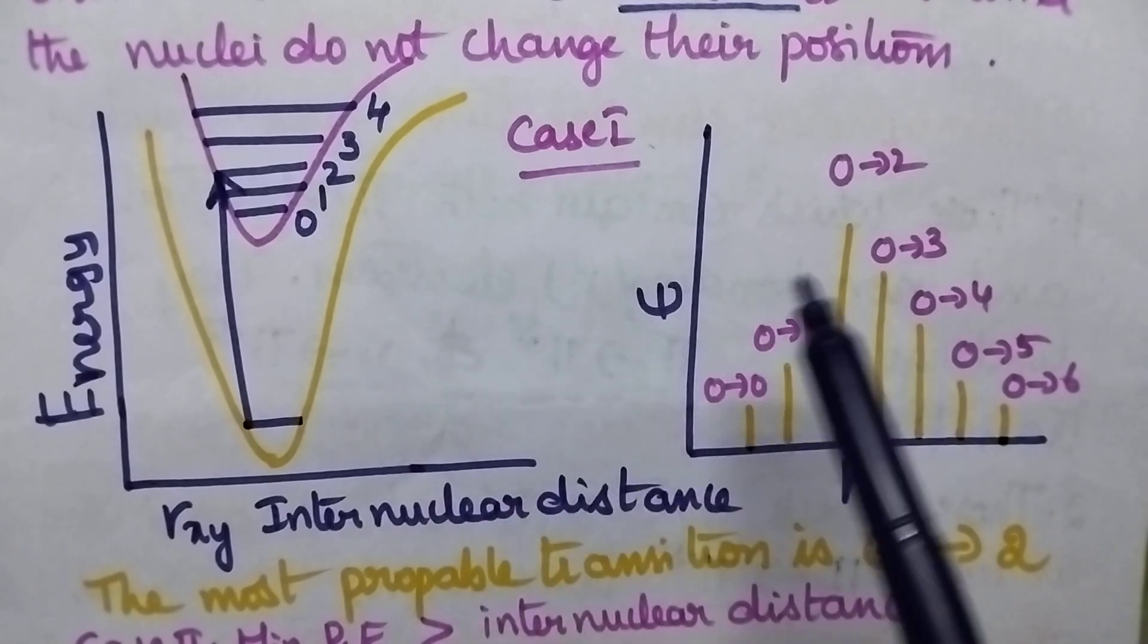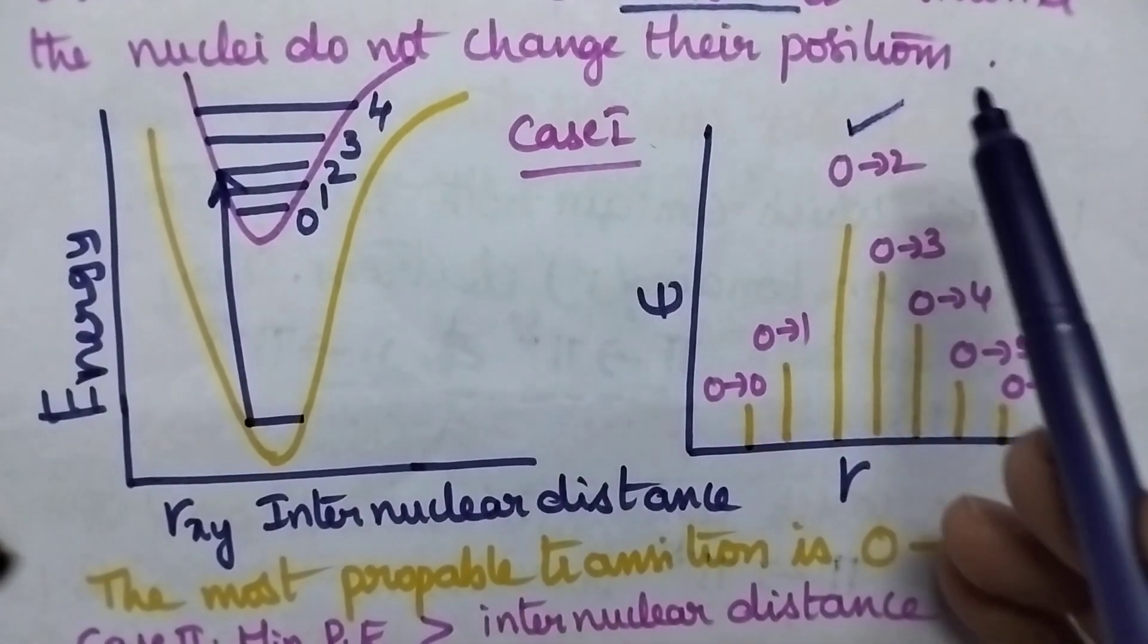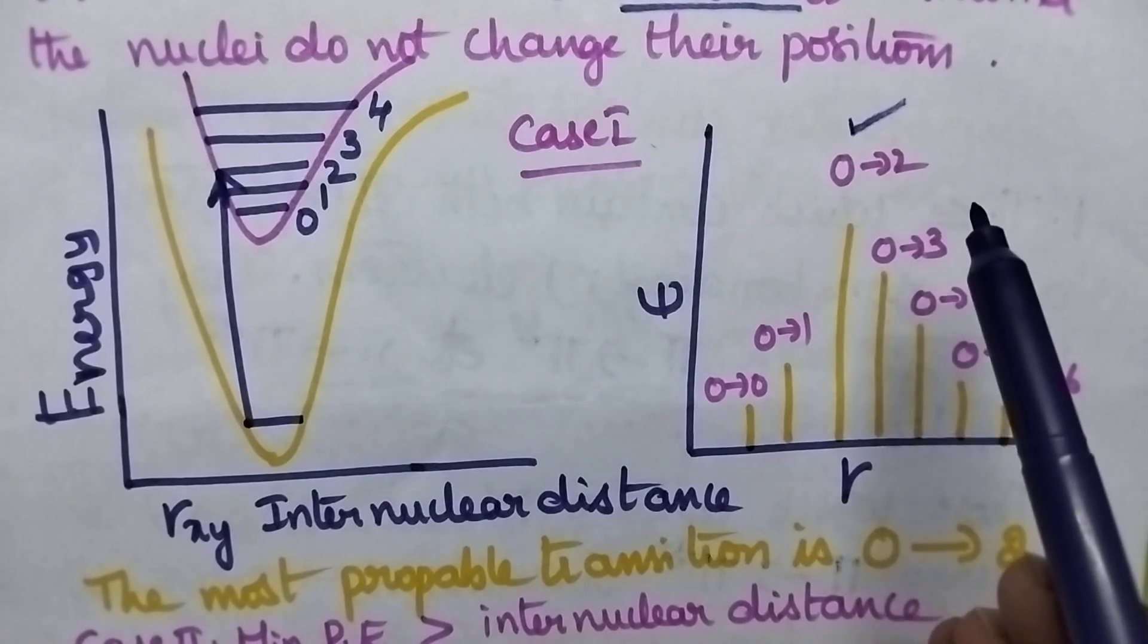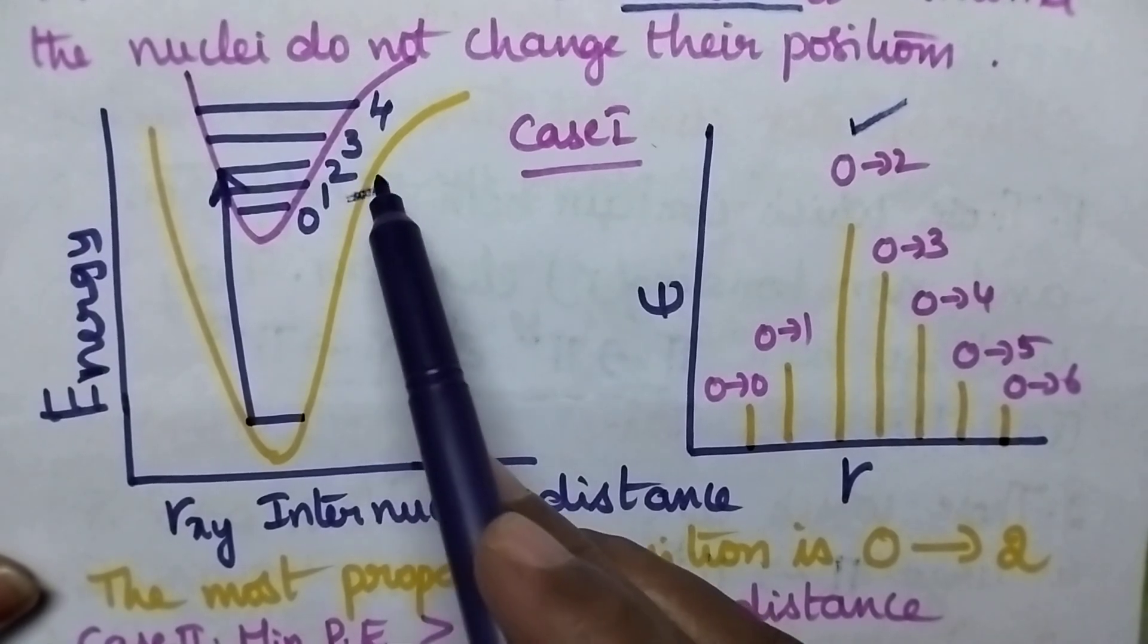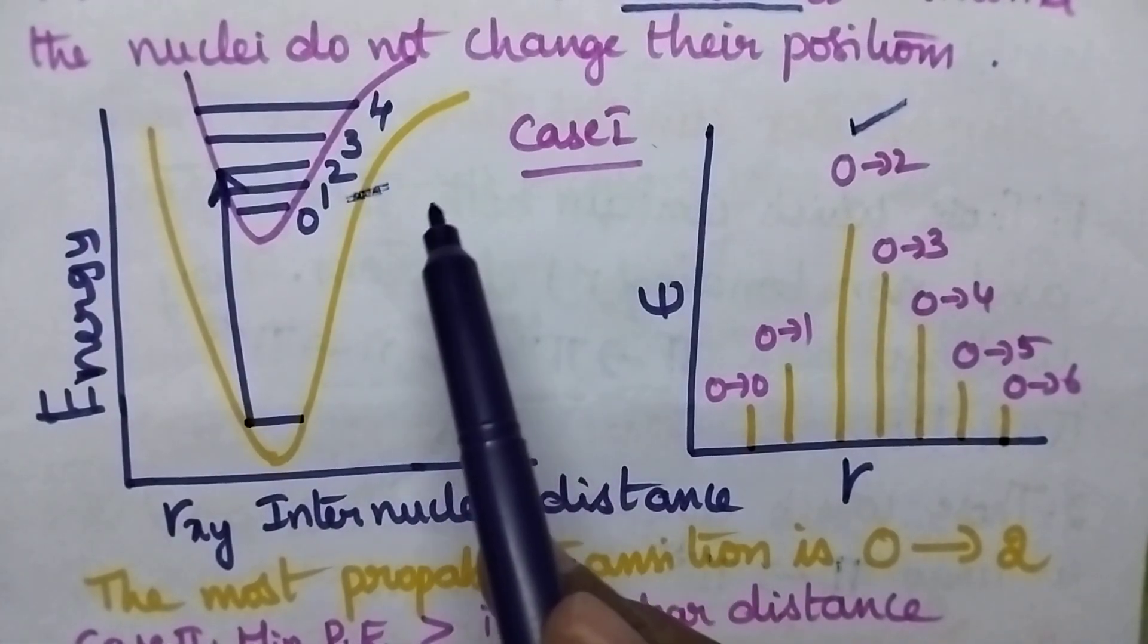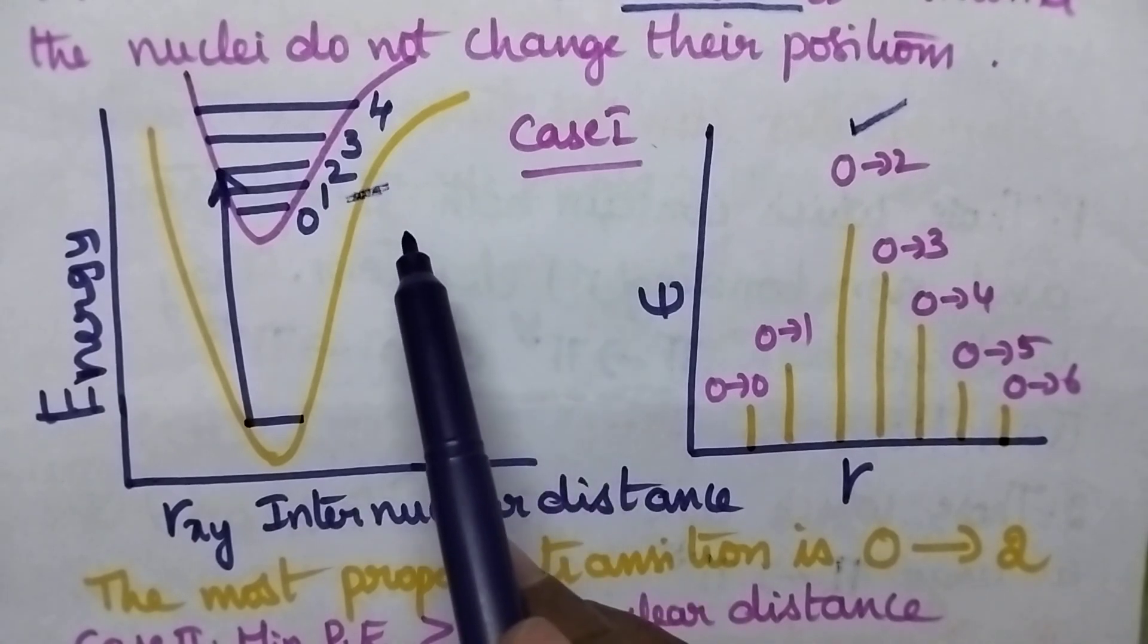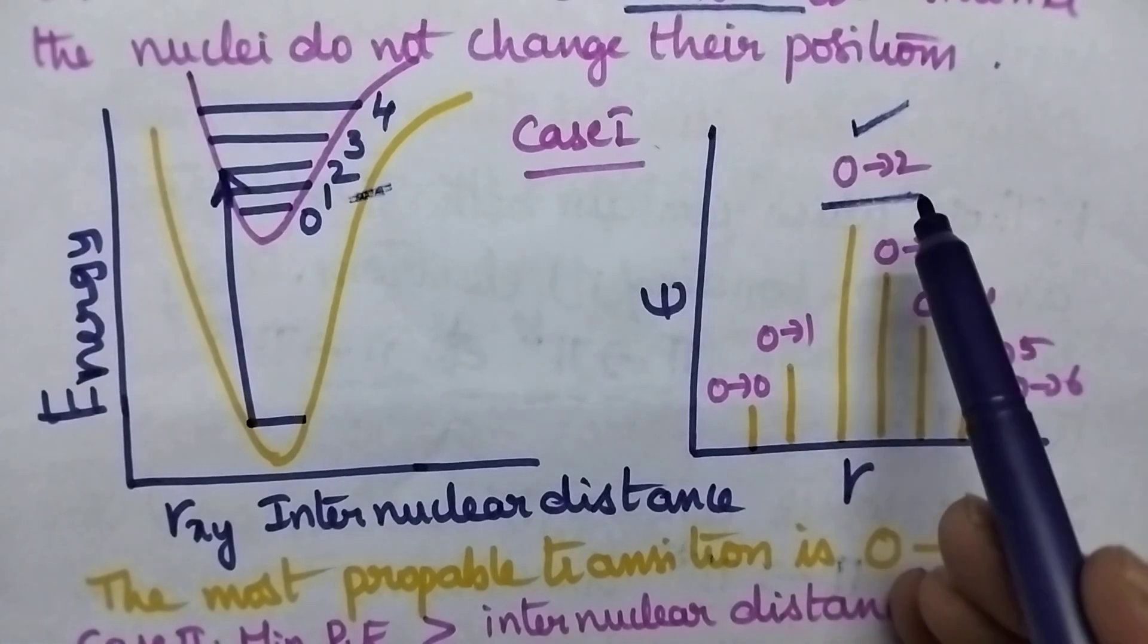Remember that the transition from the ground state to the second excited state is highly probable and stable. At the second level, it is associated with low kinetic energy, so electrons are more stable. Hence, the most probable transition is from 0 to 2.